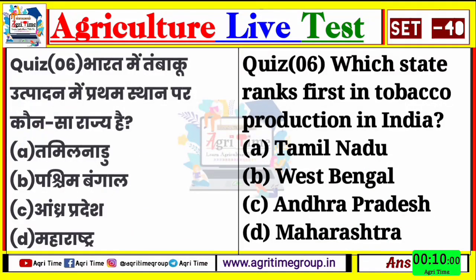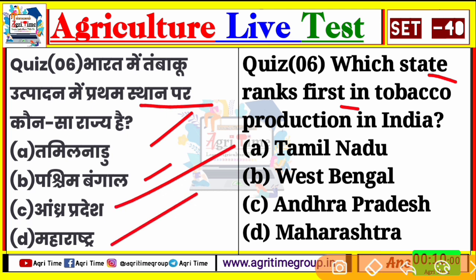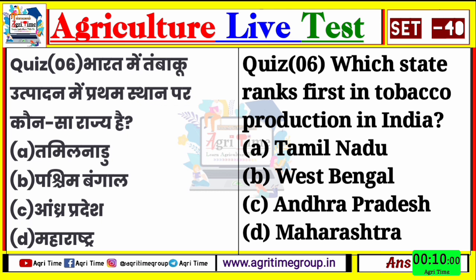बढ़ते हैं अगले question की ओर question number 6। ये रहा आपके screen पर - भारत में तम्बाखू उत्पादन में प्रथम स्थान पर कौन सा राज्य है? अगर आपको नकल करना आता है, copy करना आता है, तो आप जरूर से जरूर quiz 6 का right answer दे पाओगे। चलिए comment कीजिए।